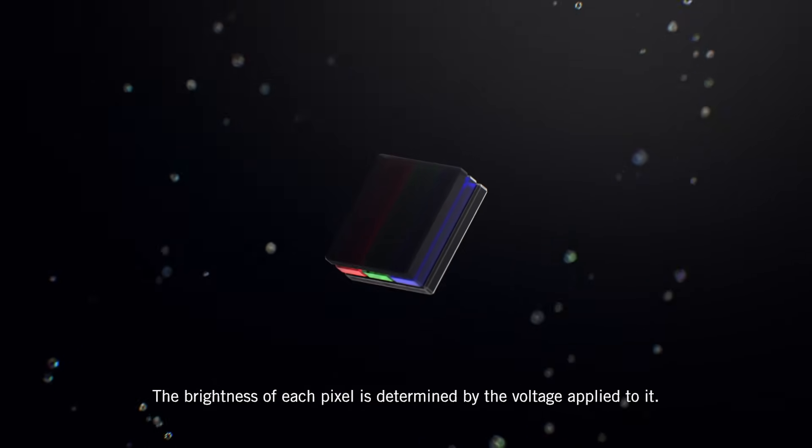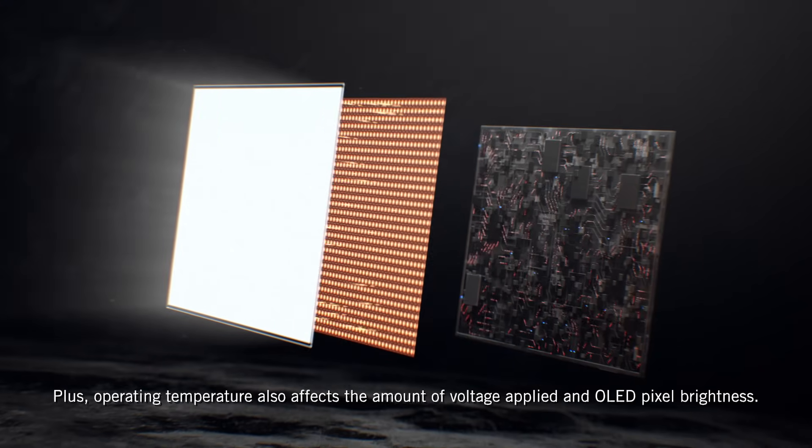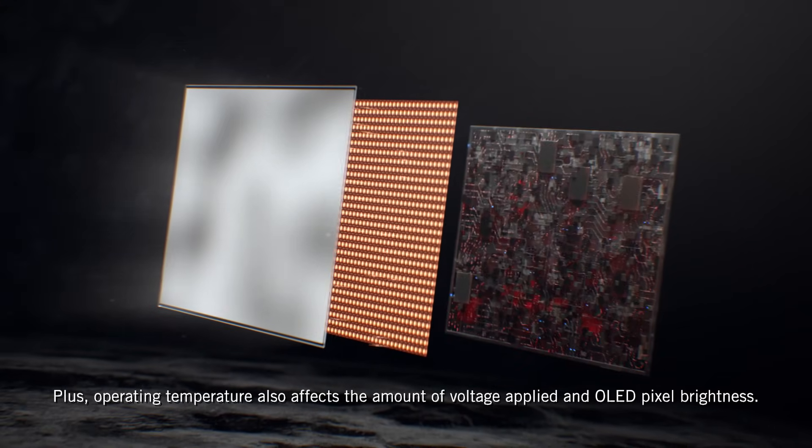The brightness of each pixel is determined by the voltage applied to it. Plus, operating temperature also affects the amount of voltage applied at OLED pixel brightness.